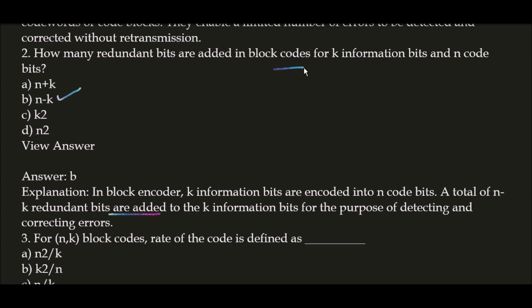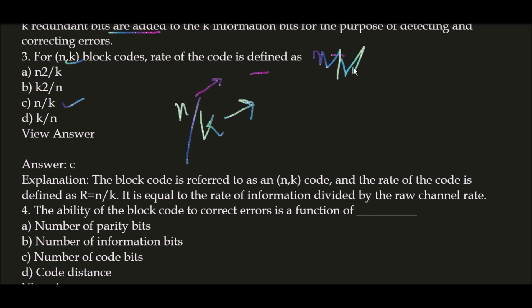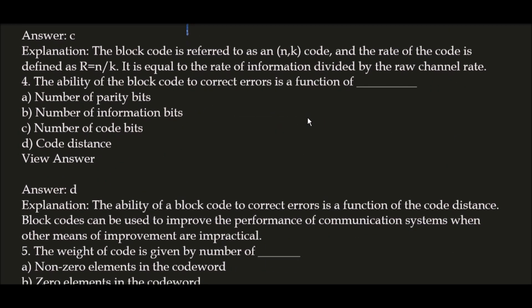Next question: for an (n, k) block code, the rate of the code is defined as? The correct answer is n divided by k. The block code is referred to as an (n, k) code, and the rate of the code is defined as R = n/k, equal to the rate of information divided by the raw channel rate. This is a very important and frequently asked question.